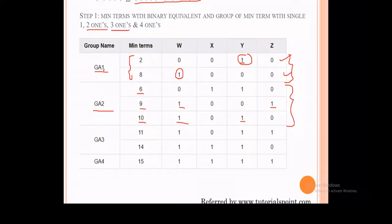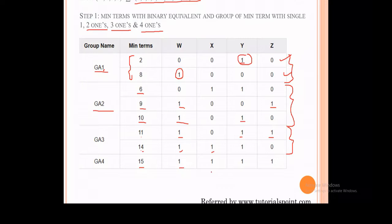The third group contains minterms with three '1's. Minterm 11 is 1011 — it has three '1's. Minterm 14 also has three '1's. These form group GA3. Then, minterm 15 has four '1's, so it forms group GA4 with only one minterm.